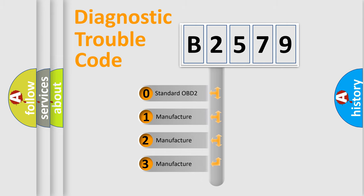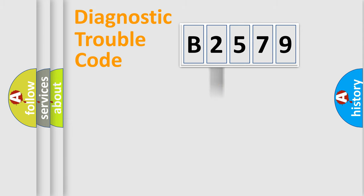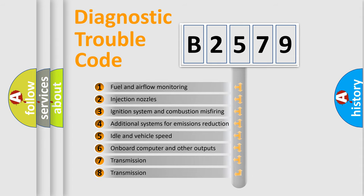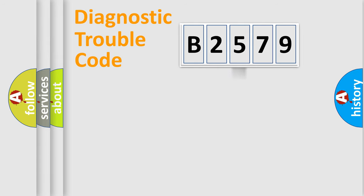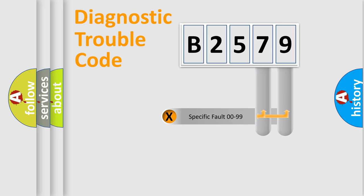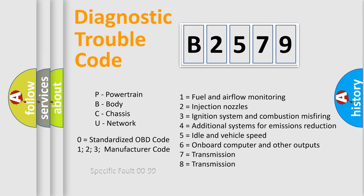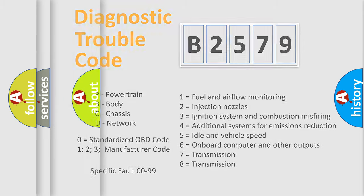If the second character is expressed as zero, it is a standardized error. In the case of numbers 1, 2, or 3, it is a more specific expression of a car-specific error. The third character specifies a subset of errors. This distribution is valid only for the standardized DTC code, and only if the second character is expressed by the number zero.